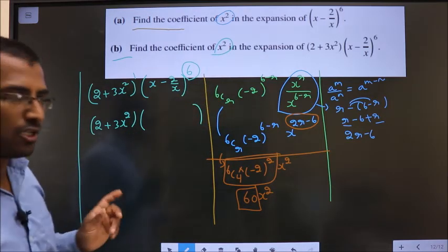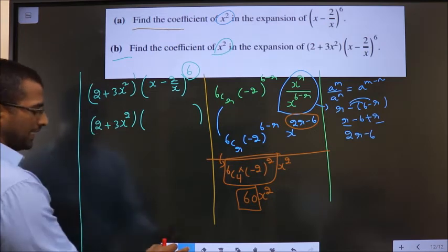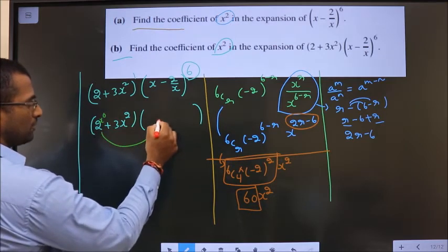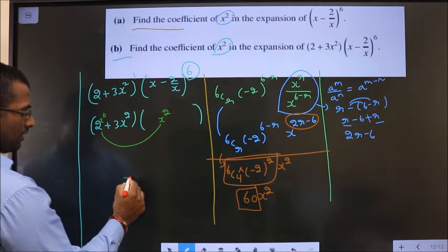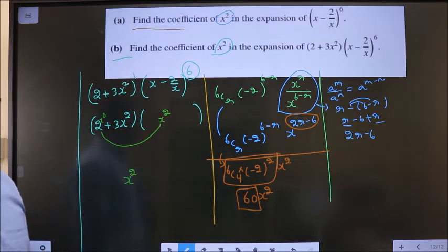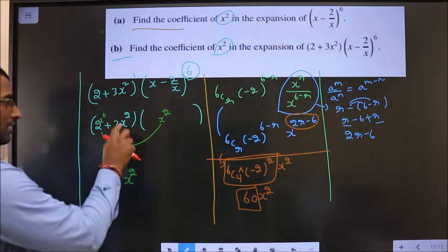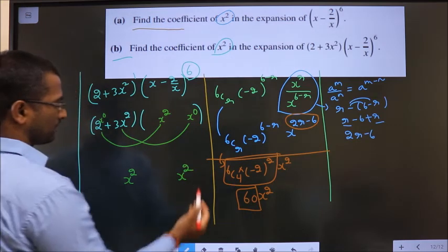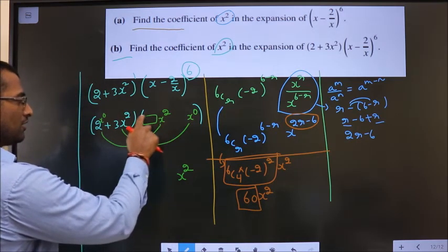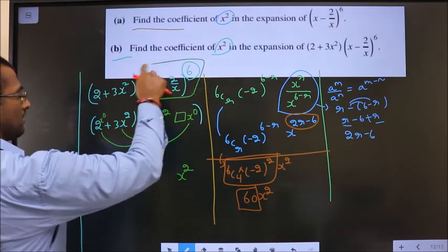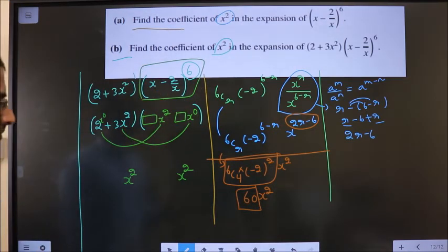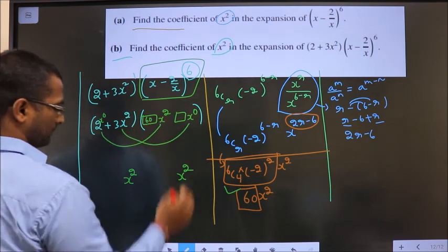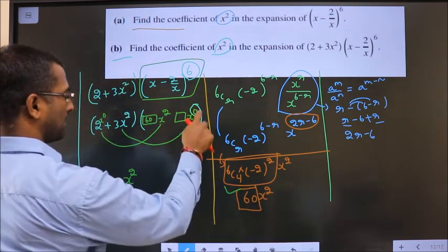Instead, I should see what all terms do I need to get x square. And how do we decide that? Based on this. Here it is 2. If you don't have anything, means let us say x power 0. This needs to be multiplied with x power 2. Then only it will result in x power 2. Here x power 2, it should be multiplied with x power 0. Then only it will result in x power 2. So, I need to know only the coefficients of these two in this expansion.